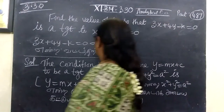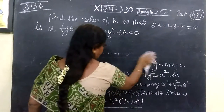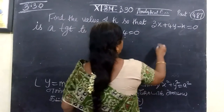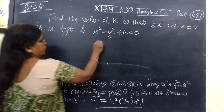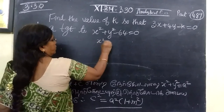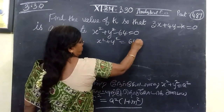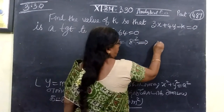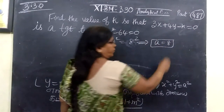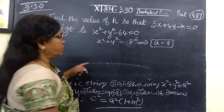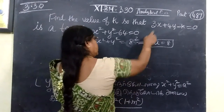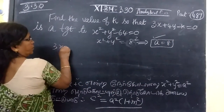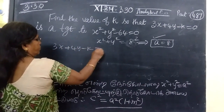The circle equation is x squared plus y squared equal to 64, where the radius R is 8. The straight line is 3x plus 4y minus k equal to 0.